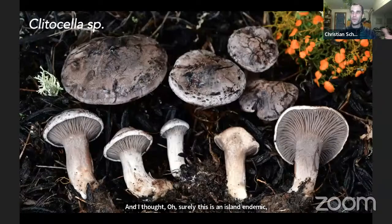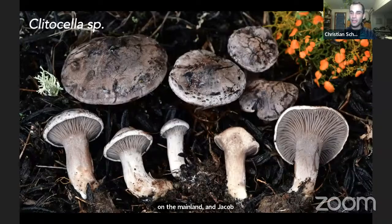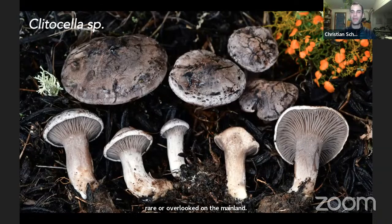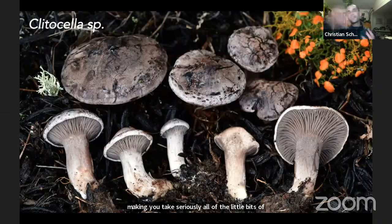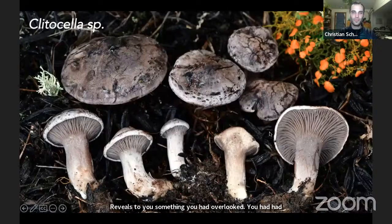This Clitocella was associated with Santa Cruz Island buckwheat, Eriogonum arborescens — a woody shrub — and it seemed to be decomposing the duff of this plant. I thought it must be an island endemic because there were hundreds of them under this buckwheat. Sure enough, once I got back to reception and searched, Jacob Kaligman had found it in San Diego — so it is present on the mainland, but either rare or overlooked there.